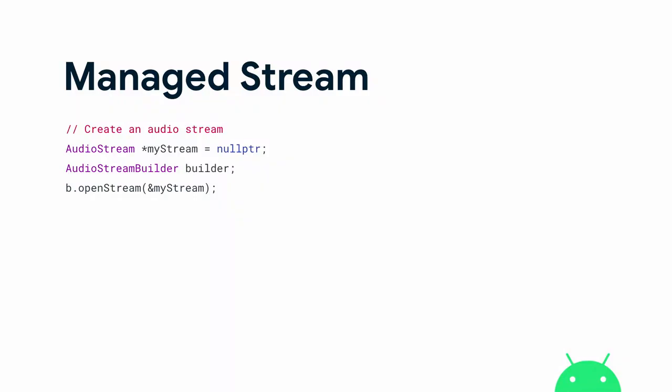The next big addition in Oboe 1.3 is the managed stream as the main way developers interface with Oboe. Previously, if you wanted to open an audio stream, Oboe would give you a raw pointer to signify ownership. As we all know, using raw pointers to signify ownership is something we want to avoid in modern C++ conventions. We were seeing a lot of developers submit issues to our GitHub where bugs were caused by lifecycle or scope issues — raw pointers being accessed after they were deleted.